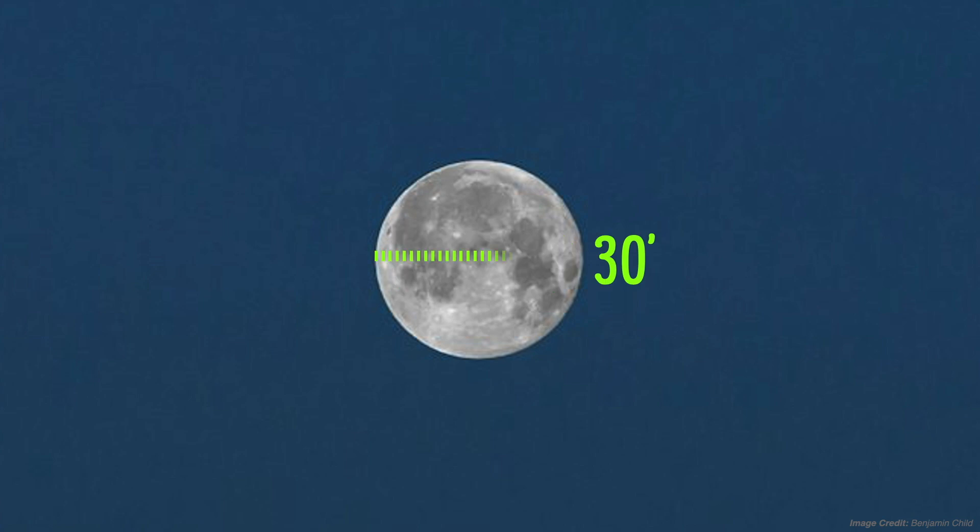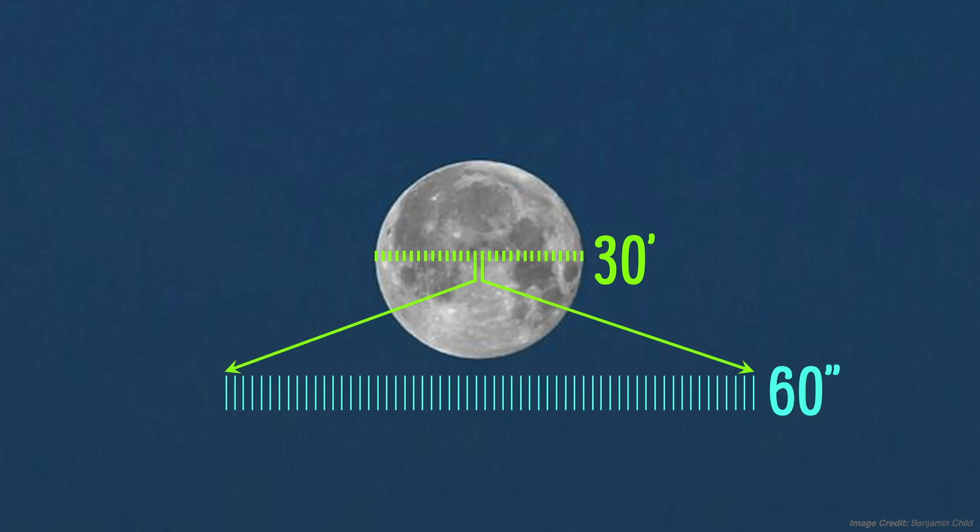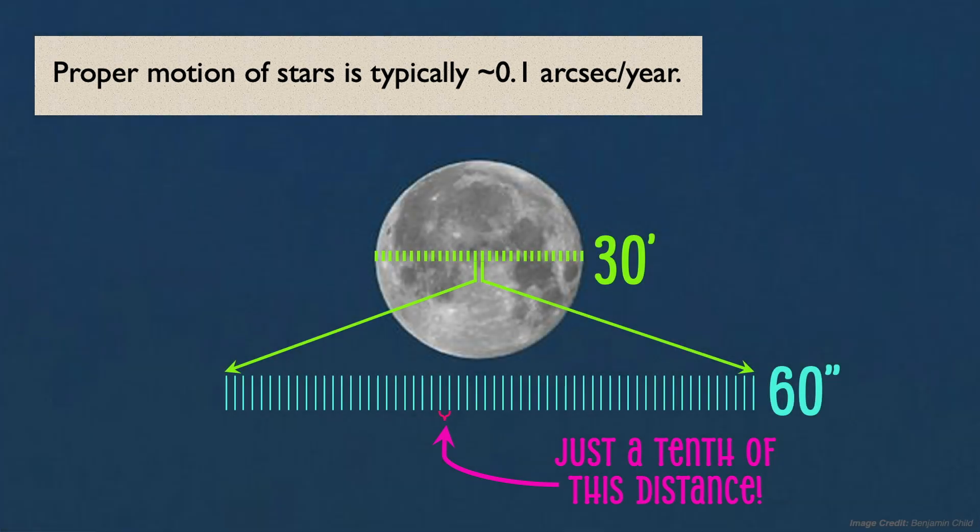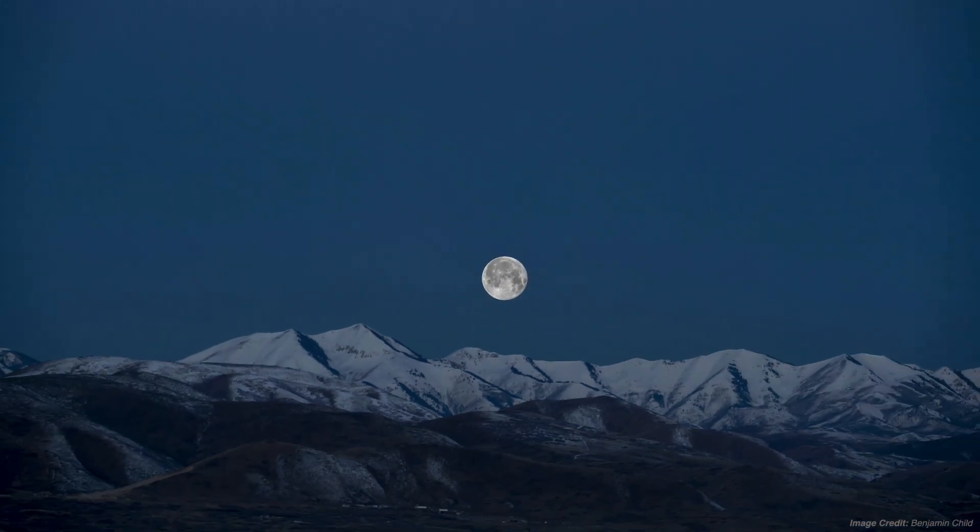Each of these dashes represents just one of those 30 arc minutes, but within each arc minute are 60 arc seconds, just as there are 60 seconds in a minute of time. So when we say that the proper motion of stars is typically about a tenth of an arc second per year, we basically mean it's a tenth of these arc seconds, which have been significantly magnified to show you exactly how small proper motion really is.